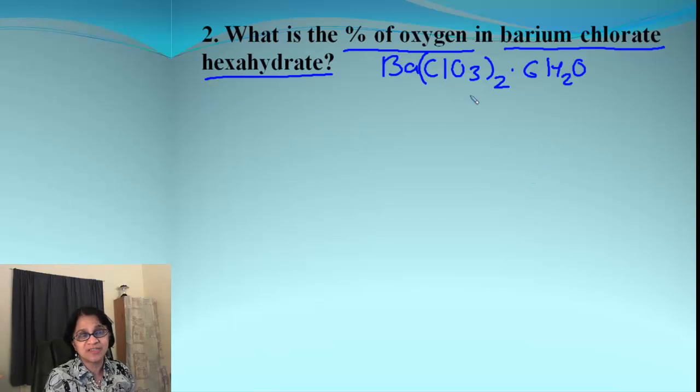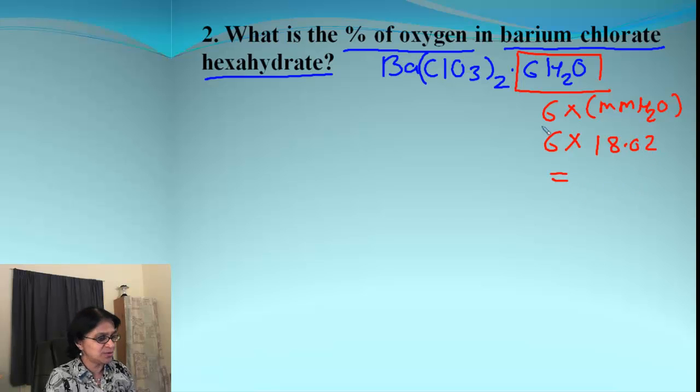The very first thing is we need to find out the molar mass for this compound. And I'm going to tell you an easy method. Split that 6H2O separate because you can write down that as 6 times the molar mass for H2O. And H2O water molar mass is 18.02. So you can separately get that answer due to water and which I'm getting here as 108.12.